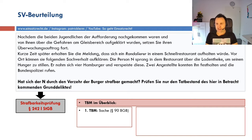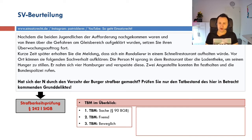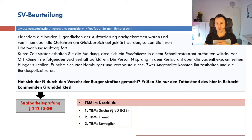Es gibt drei erste TBMs des Diebstahls, die relativ überschaubar sind und wo man Zeit gewinnen kann: Sache, fremd und beweglich. Auf meiner eLo-Page, deren Link in der Videobeschreibung ist, habe ich mich explizit zum Diebstahl ausgelassen, zu den Definitionen, und gebe Hinweise und Tricks zur Subsumption.